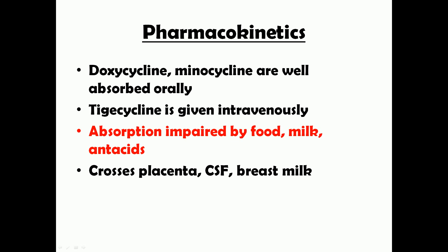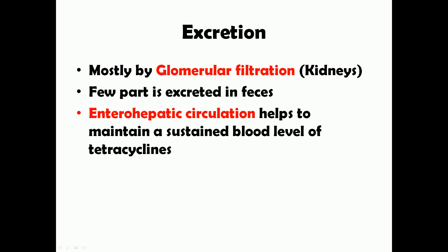Another important pharmacokinetic feature is that tetracyclines cross the placenta very well and are also secreted in breast milk. The concentration attained in cerebrospinal fluid is about 25% of that present in serum. Because they can reach the fetus and cause toxic effects, and also enter infants through breast milk, this is a significant safety concern. Excretion is mostly by glomerular filtration by the kidneys, with some biliary and fecal excretion.